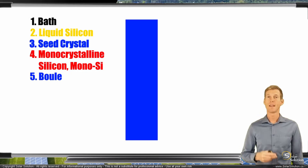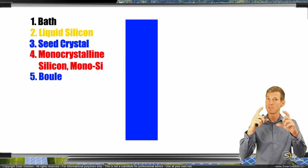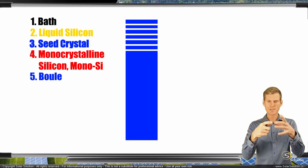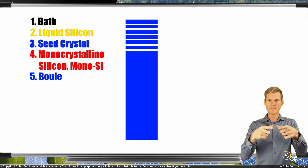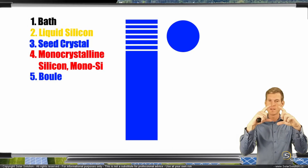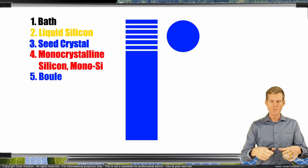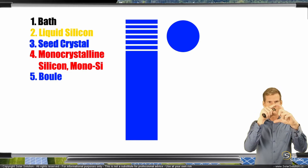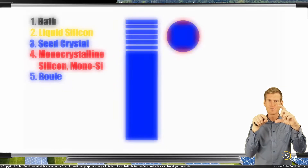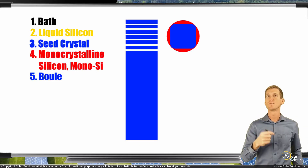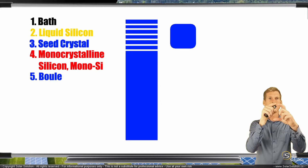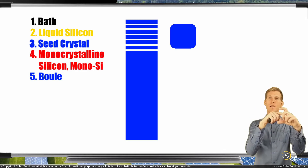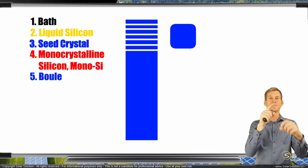Then we end up with a perfect monocrystalline silicon boule — a perfect cylinder. In order to turn this cylinder into solar cells, we cut really thin slices of it — really, really thin slices. Because it is a cylinder, each slice will be a circle, which is not ideal for building a photovoltaic module. We call this thin slice a wafer. Then we cut the edges of the circle so that what's left over is an almost perfect square — almost perfect because you can still see that the edges are slightly rounded off. It's an efficiency step; cutting a perfect square would waste too much material.